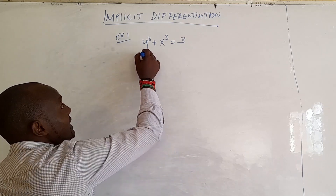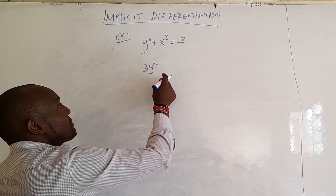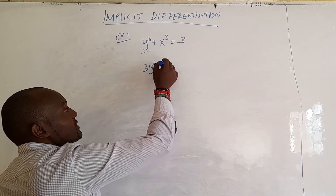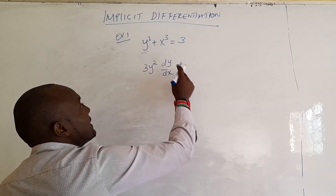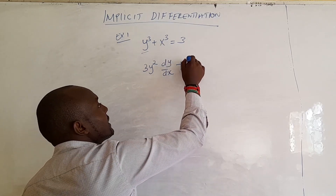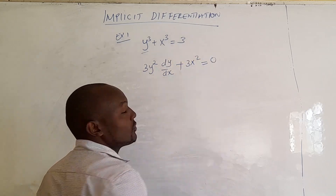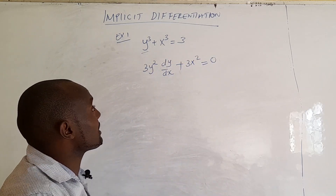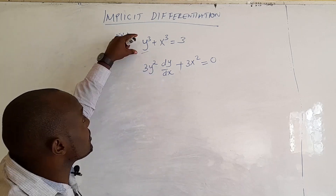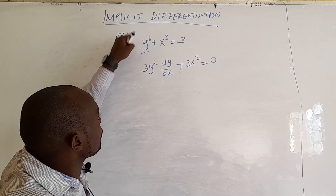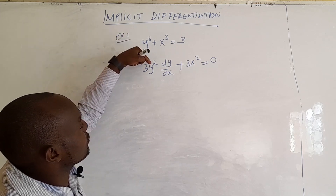So we get the derivative of this term. We get 3y squared, but because we are getting the change in y over change in x, it will be 3y squared times dy/dx. Whenever we have y, we must add dy/dx — we differentiate the way it is: bring the 3 down, then y to power 3 minus 1 gives us 2.